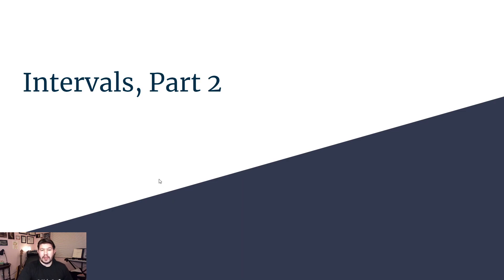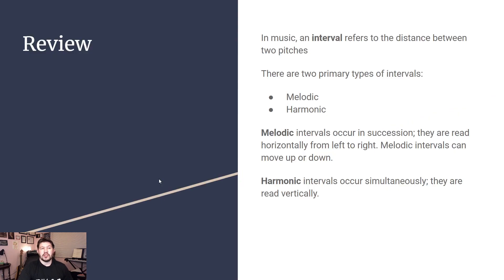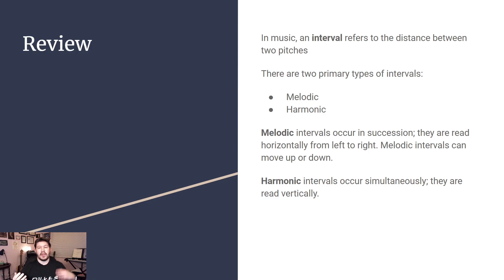So let's go ahead and first thing we're going to do, we are going to review just a little bit here some basic things from our last lesson. Please remember an interval refers to the distance between two pitches, and there are two primary types of interval: melodic intervals and harmonic intervals.